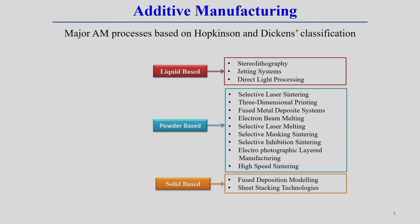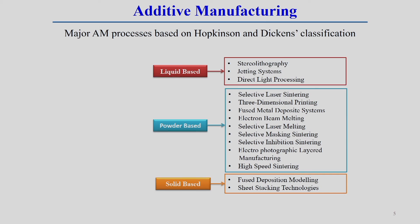There are different ways to classify additive manufacturing processes — applicable to both polymeric and metallic materials. Based on raw material form, there are three types: liquid-based, where the raw material is in liquid form; powder-based, where the raw material is in powder form; and solid-based, where the raw material can be in the form of a sheet or wire.